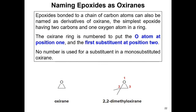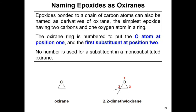Epoxides can also be named as derivatives of oxyrane — the simplest epoxide, with an oxygen bonded to two carbons. The oxyrane ring is numbered with oxygen at position 1 and the first substituent at position 2. For a monosubstituted oxyrane, no number is needed for the substituent — just 'methyl oxyrane.' For two methyl groups on the second carbon, it's 2,2-dimethyloxyrane.